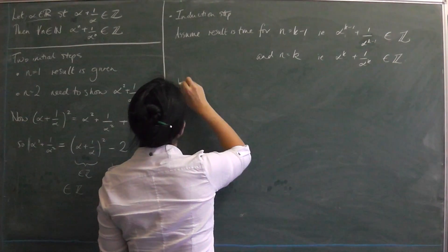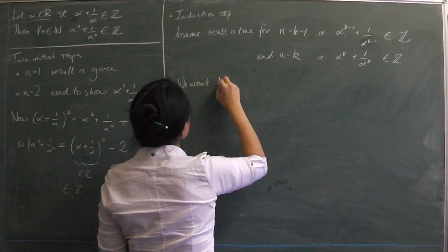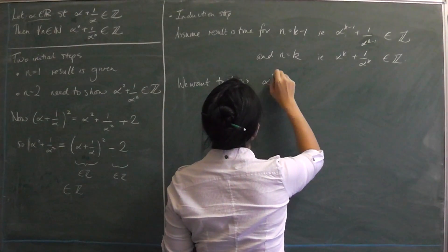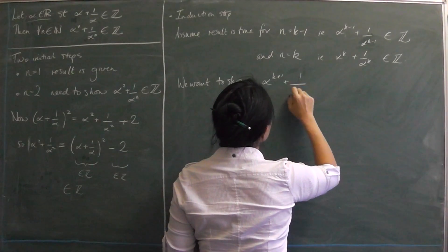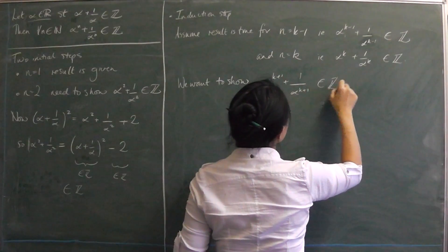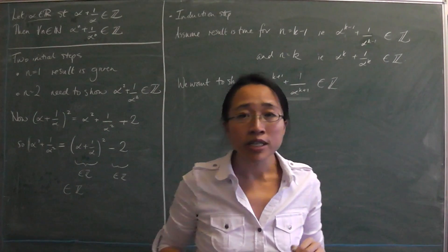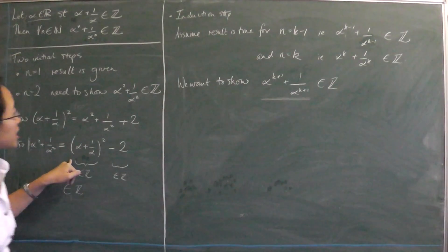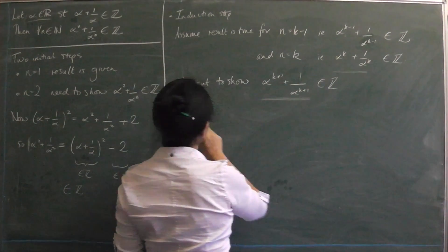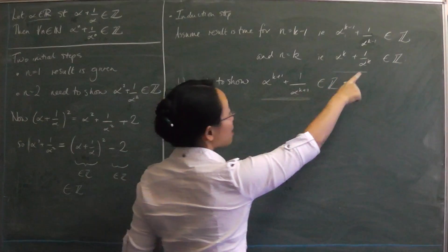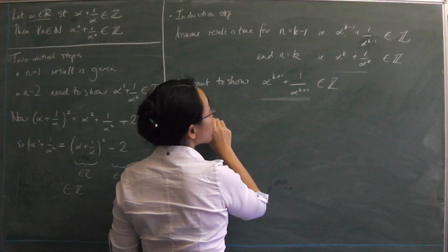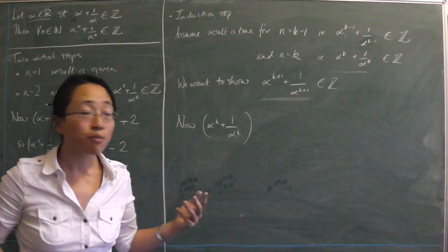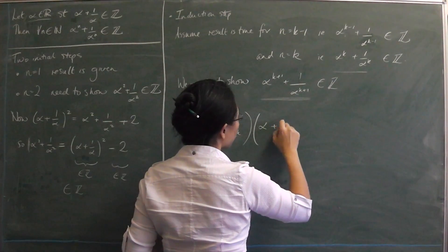What we want to show is the result for n equals k plus 1: that alpha to the k plus 1 plus 1 over alpha to the k plus 1 is an integer. How can we understand it in terms of the things we already know? Let's try something similar to what we did before — take alpha to the k plus 1 over alpha to the k, and multiply it by alpha plus 1 over alpha.